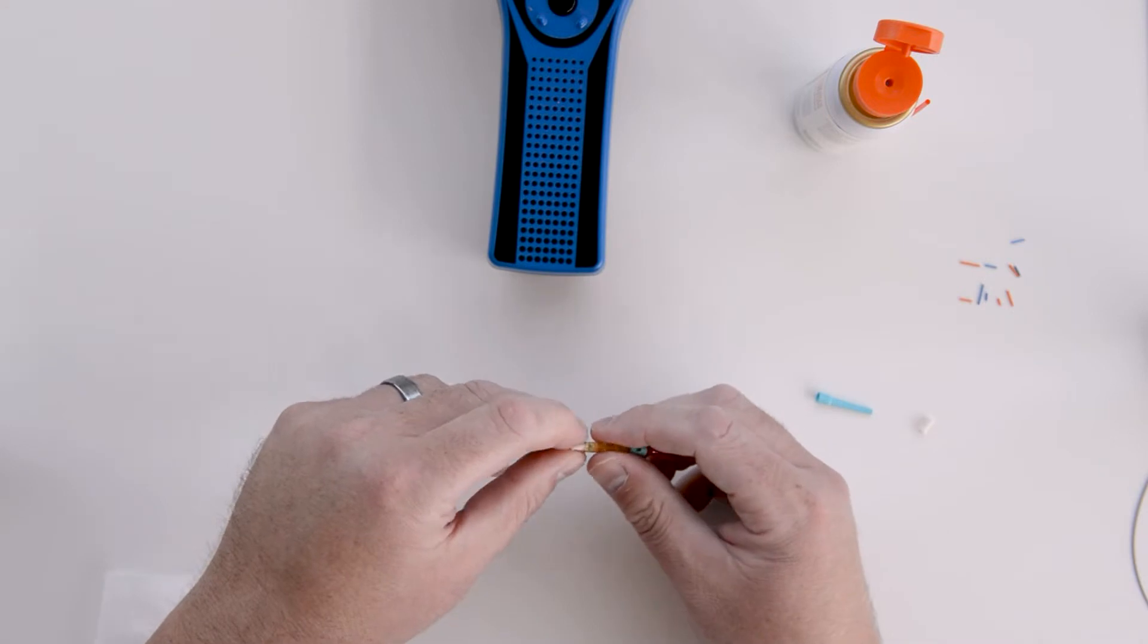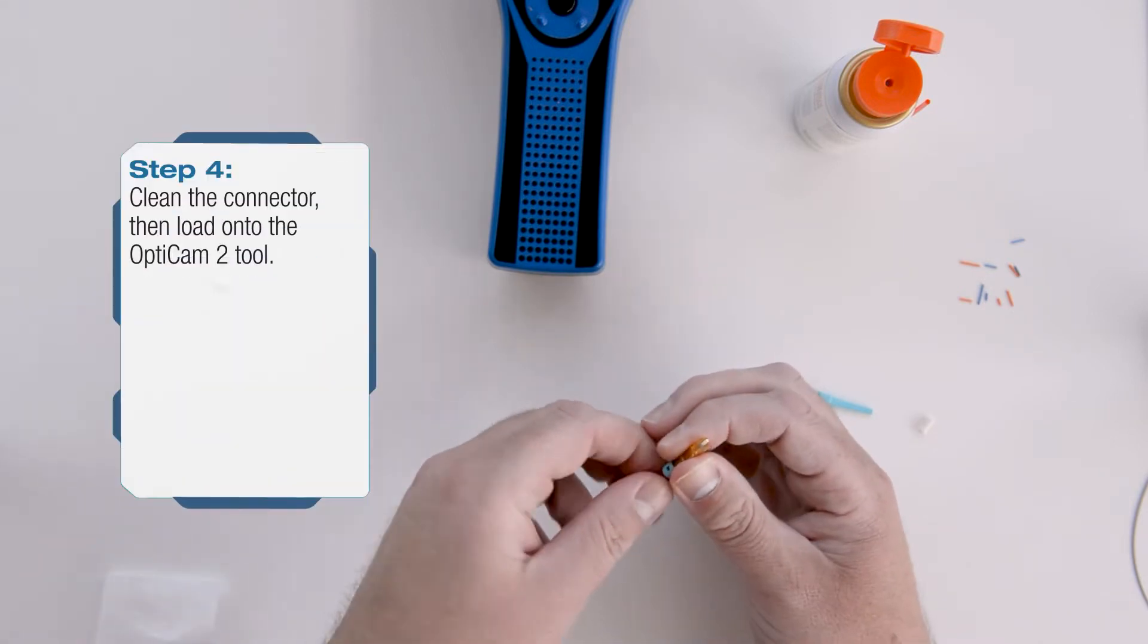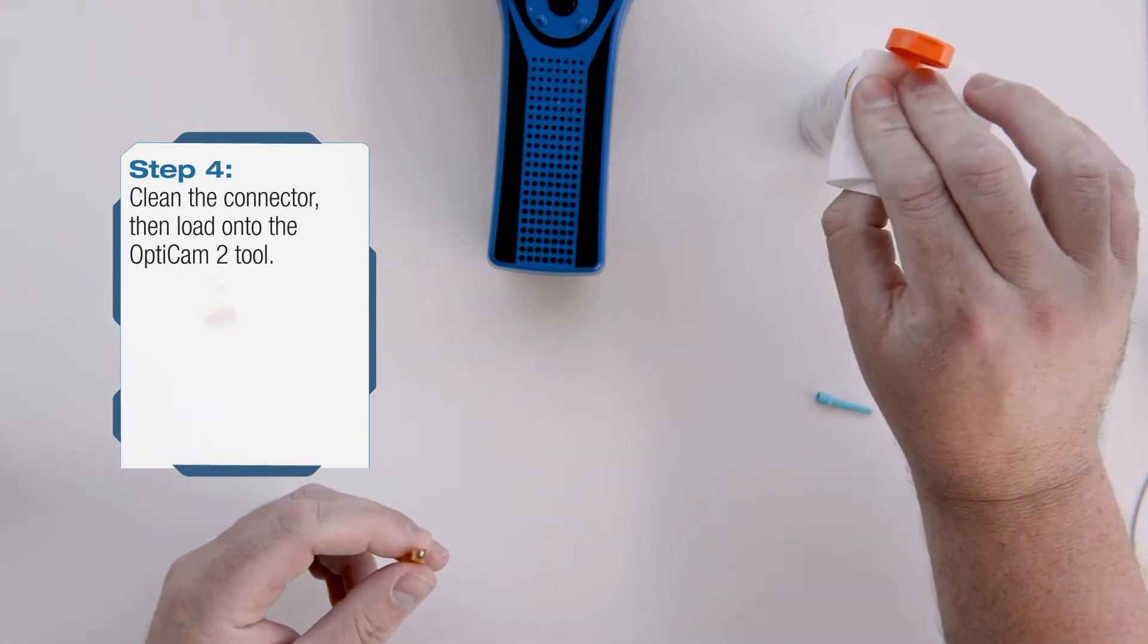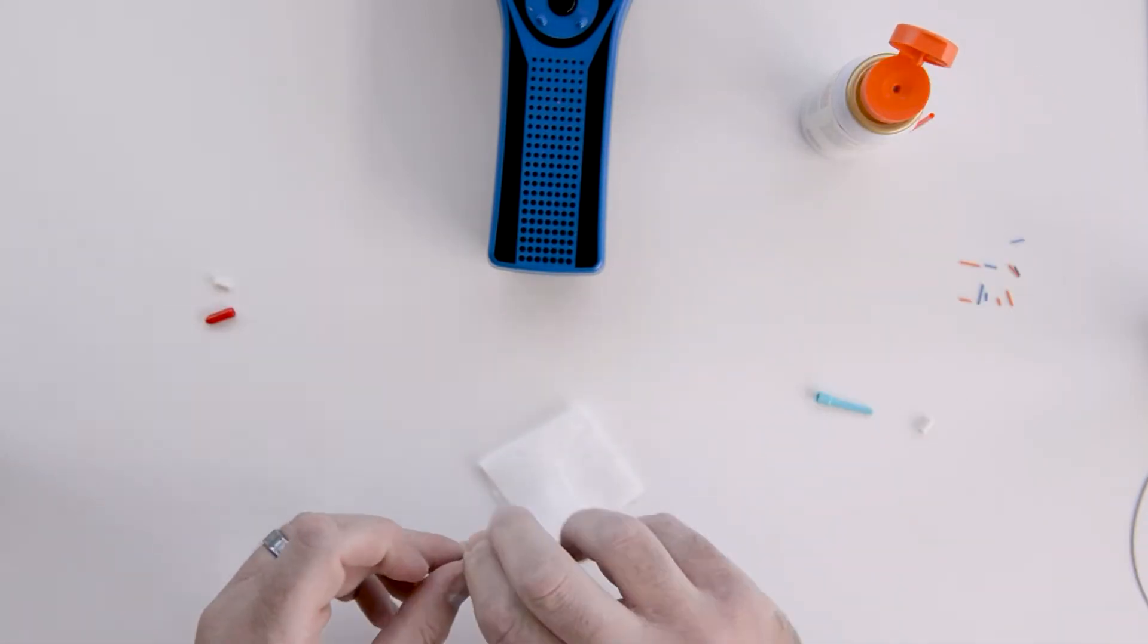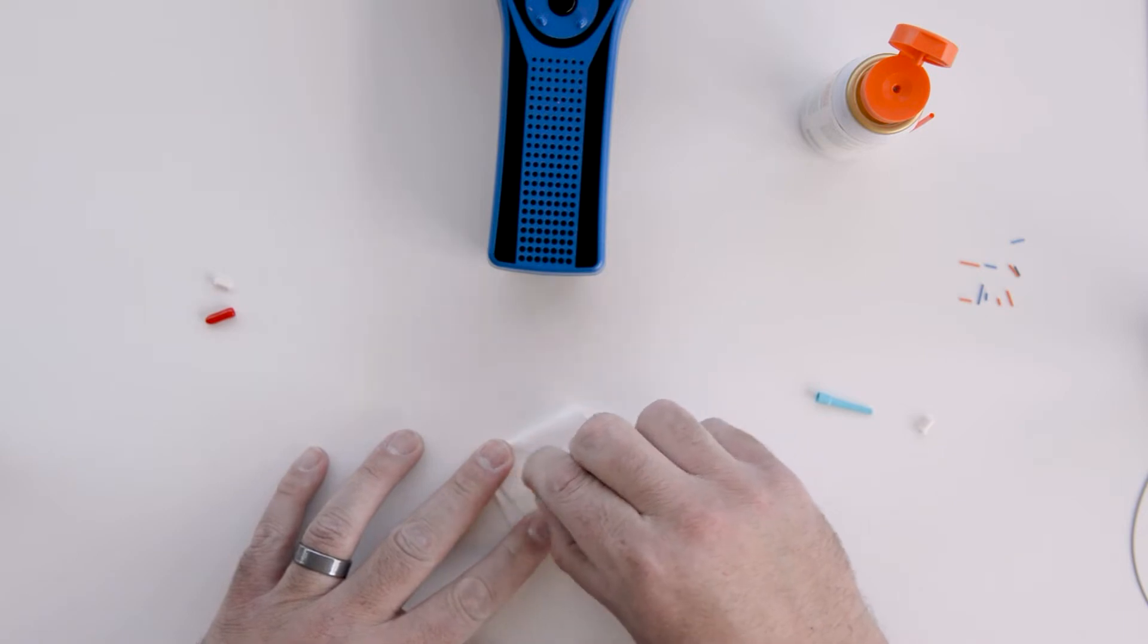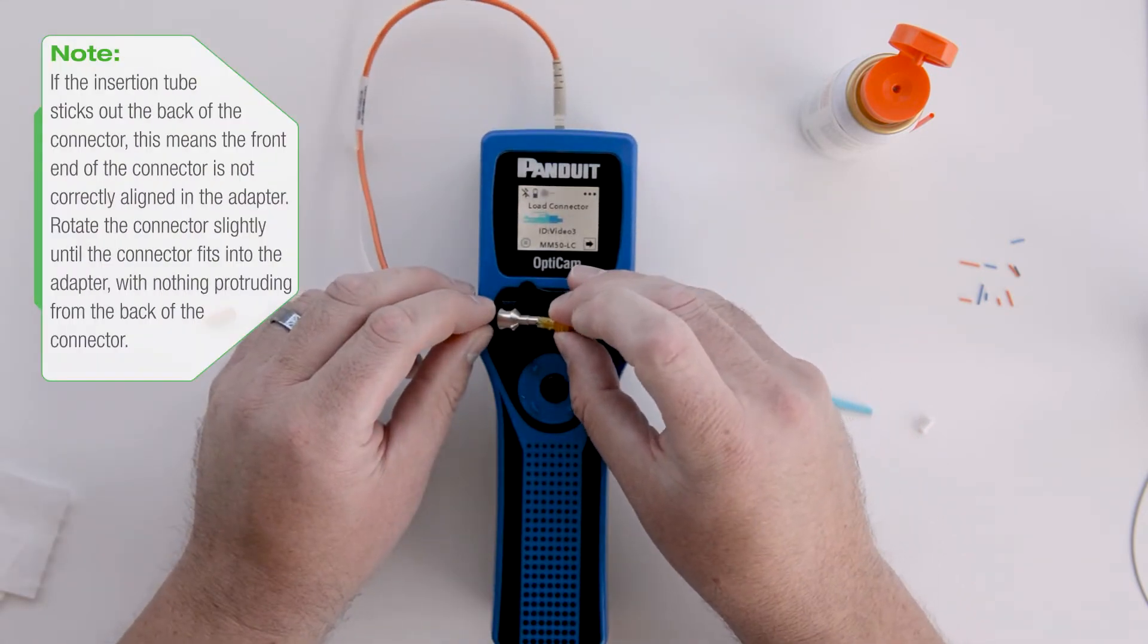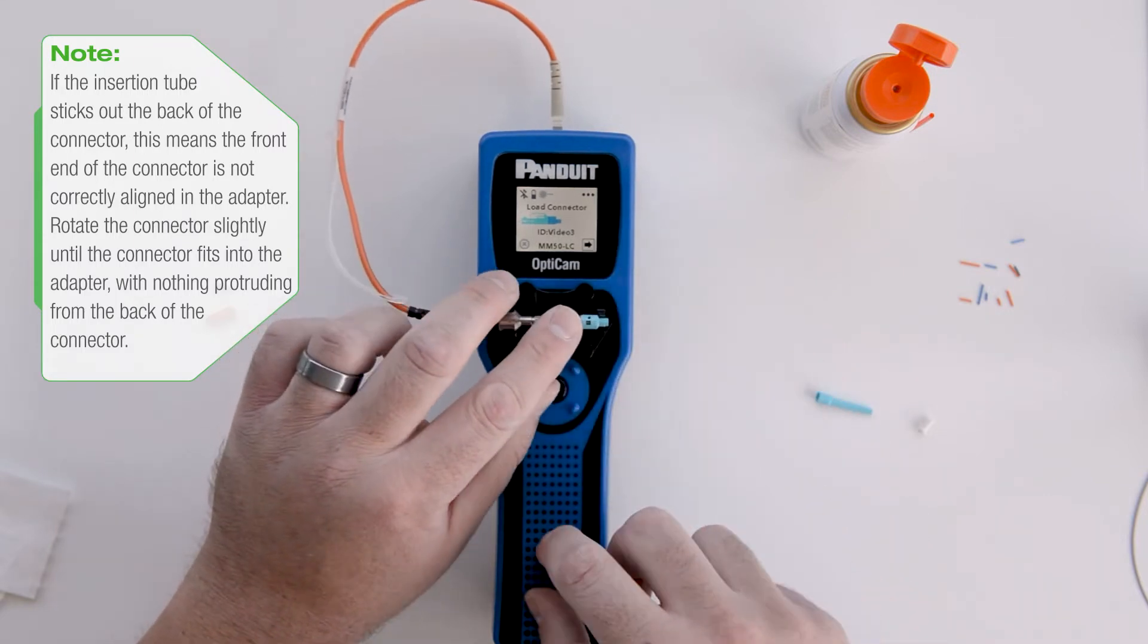Remove the dust cap and boot from the connector ferrule, then clean the ferrule end face using an approved wipe and cleaning solution. Insert the ferrule under the connector into the adapter and snap it into the cradle.